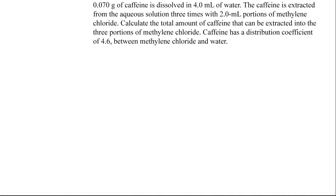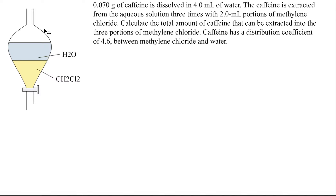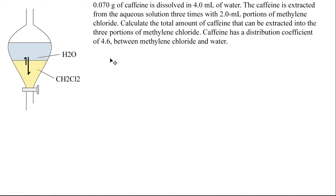Today, I will show three ways to solve partition coefficient problems. In order to solve this question, let's begin by first drawing a diagram. Here we have a diagram of a separatory funnel, and inside the separatory funnel, we have water and methylene chloride, or dichloromethane. Inside the water layer, we have caffeine that's been dissolved in it, and we're going to use methylene chloride to extract the caffeine. The caffeine is going to distribute itself between the two layers — some will remain in the water layer, but most will distribute into the methylene chloride layer. This is because caffeine is more soluble inside methylene chloride, and I'll explain why that is momentarily.